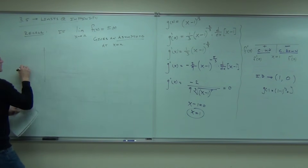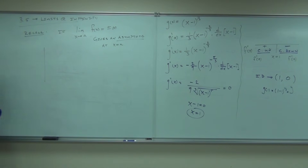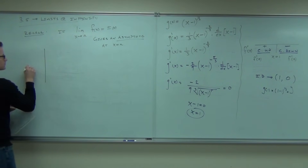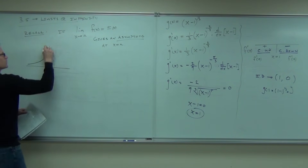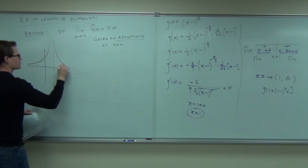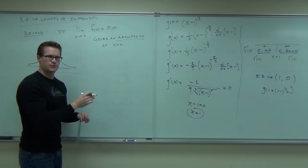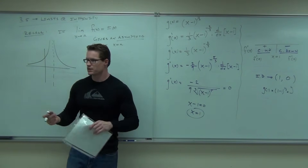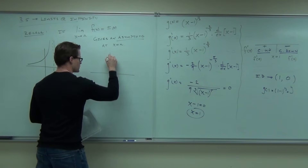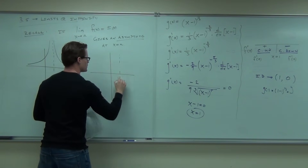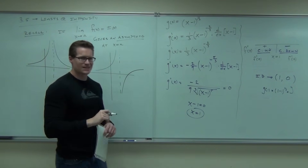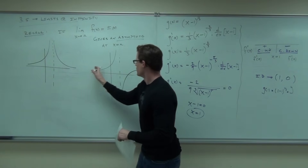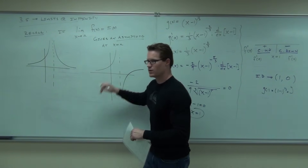We had two cases. In the first case, we went to the same infinity — positive infinity on both sides — and said the limit existed, equal to positive infinity. In the second case, one side went up and the other went down, so the limit didn't exist: one goes to positive infinity from the left, one goes to negative infinity from the right.